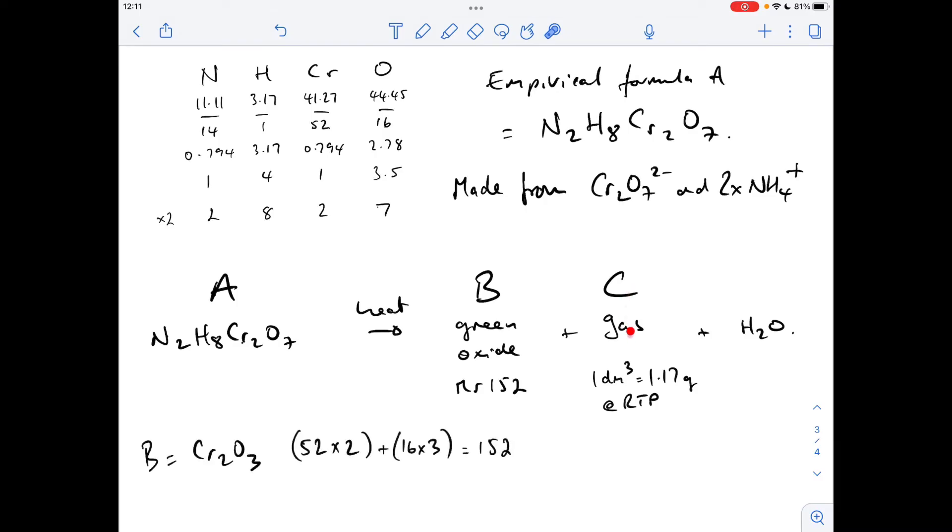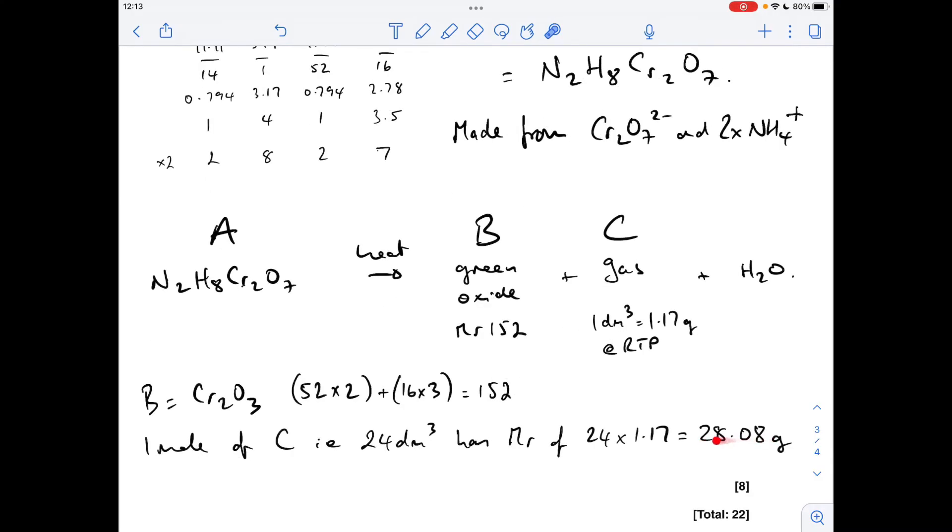So moving on to gas C now, so how do we deal with this information? Well, we know that the molar gas volume, 1 mole of any gas, occupies a volume of 24 dm³. So if we multiply this 1.17 by 24, we're going to find out the mass of what 24 dm³ is, and therefore we're going to find out the molar mass of C. So you can see that's given us an MR for C of 28.08, so that means C must be nitrogen, N₂.